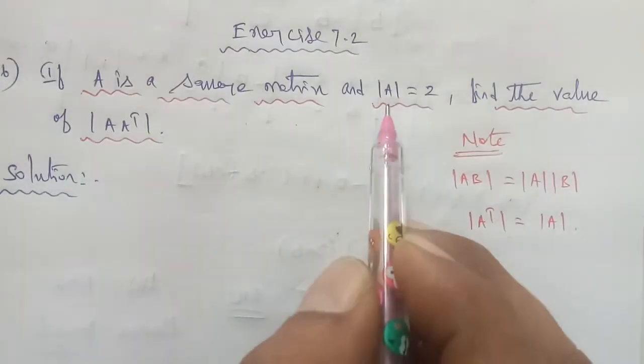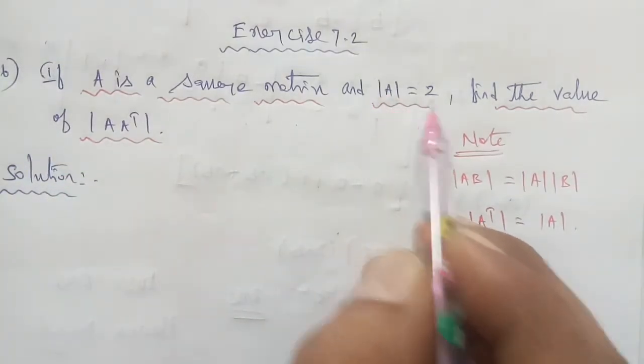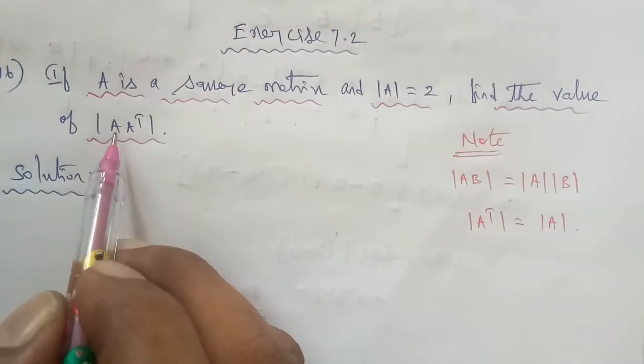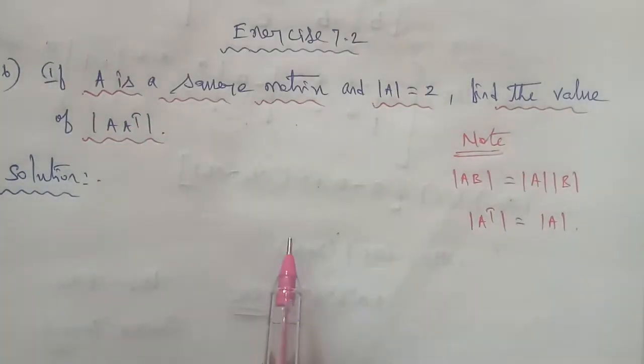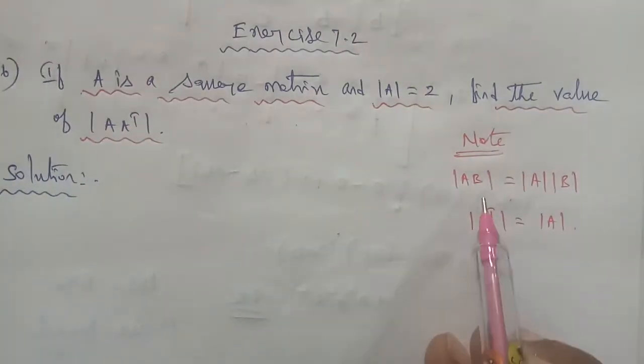If A is a square matrix and determinant A is equal to 2, find the value of determinant A times A transpose. We need to use the property.